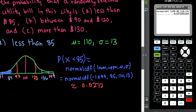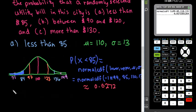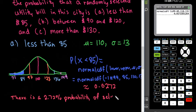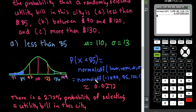So if I were to interpret this one just so that you guys can see one with an interpretation, we could say that there is a 2.72% probability of selecting a utility bill in this city that is less than $85. So that would be the interpretation.